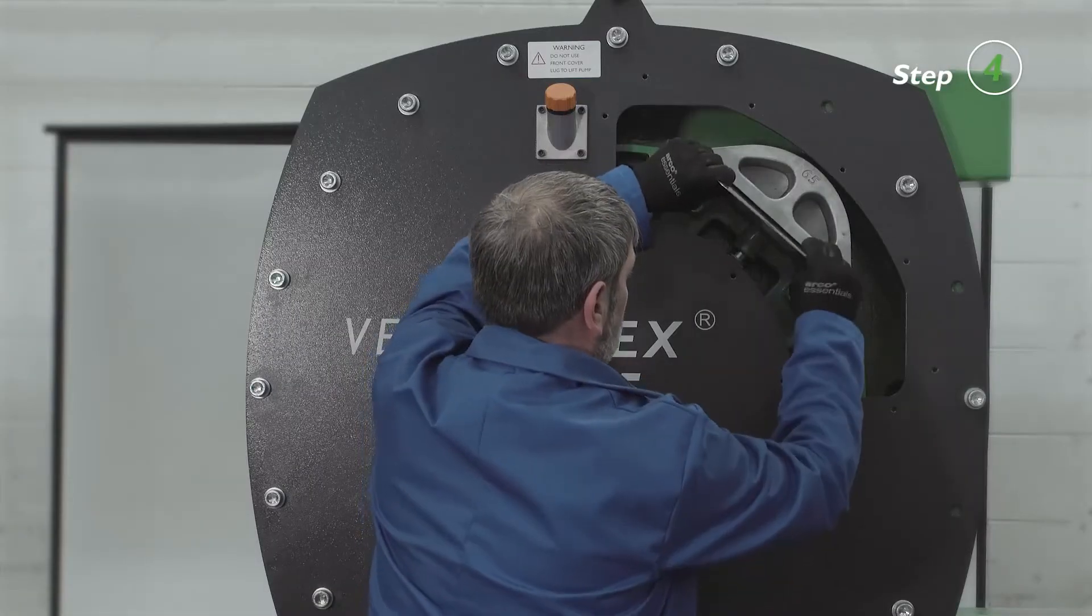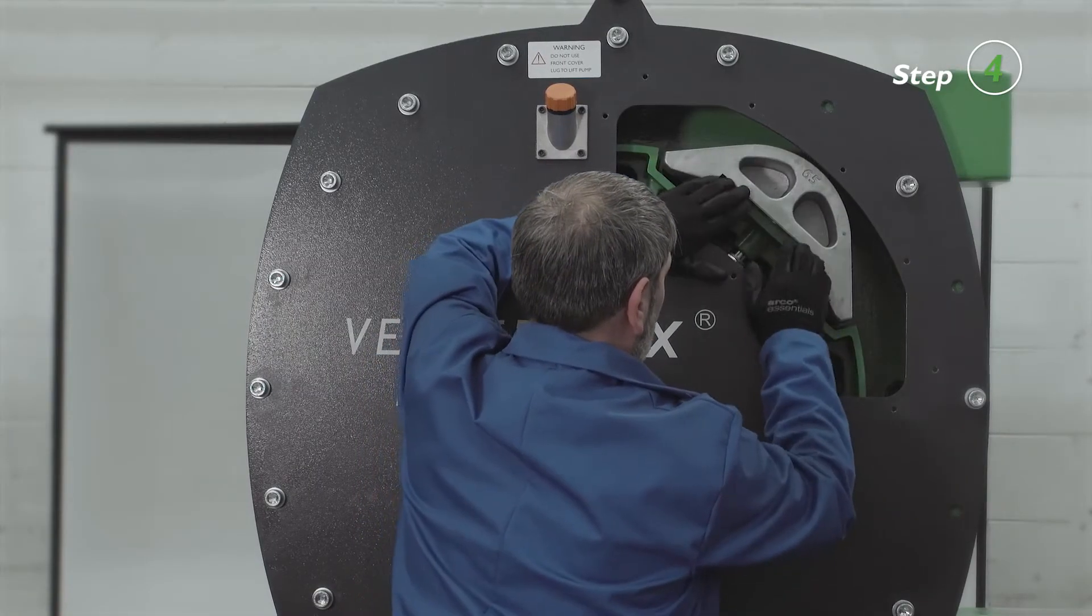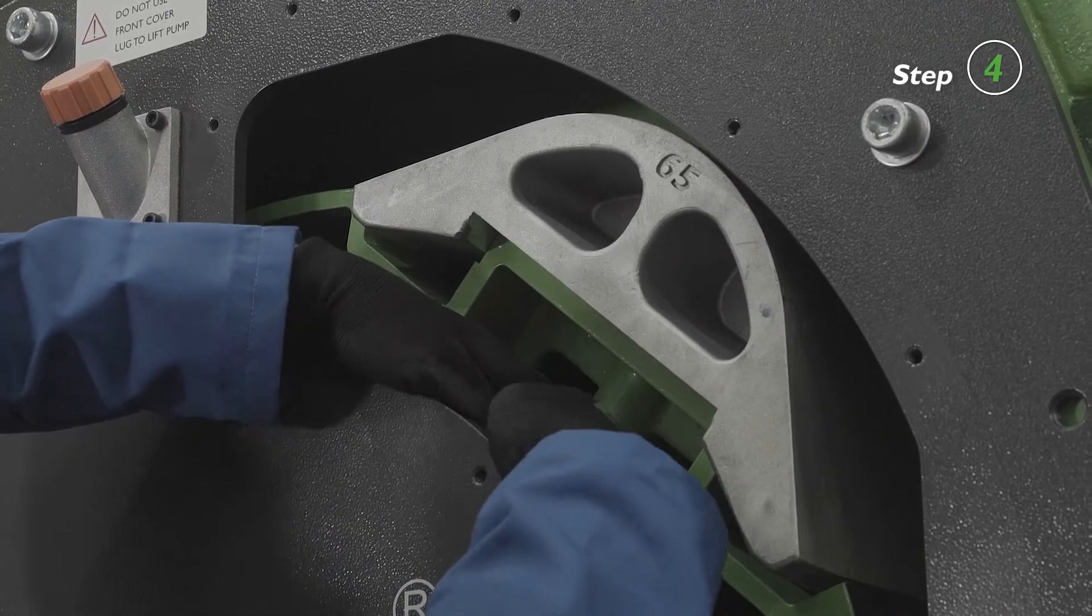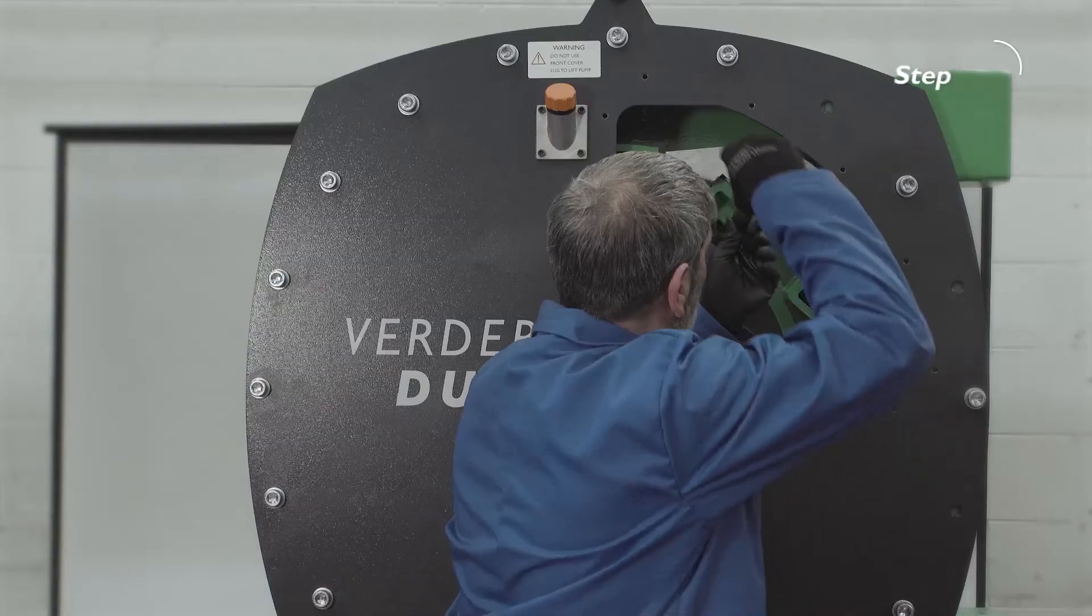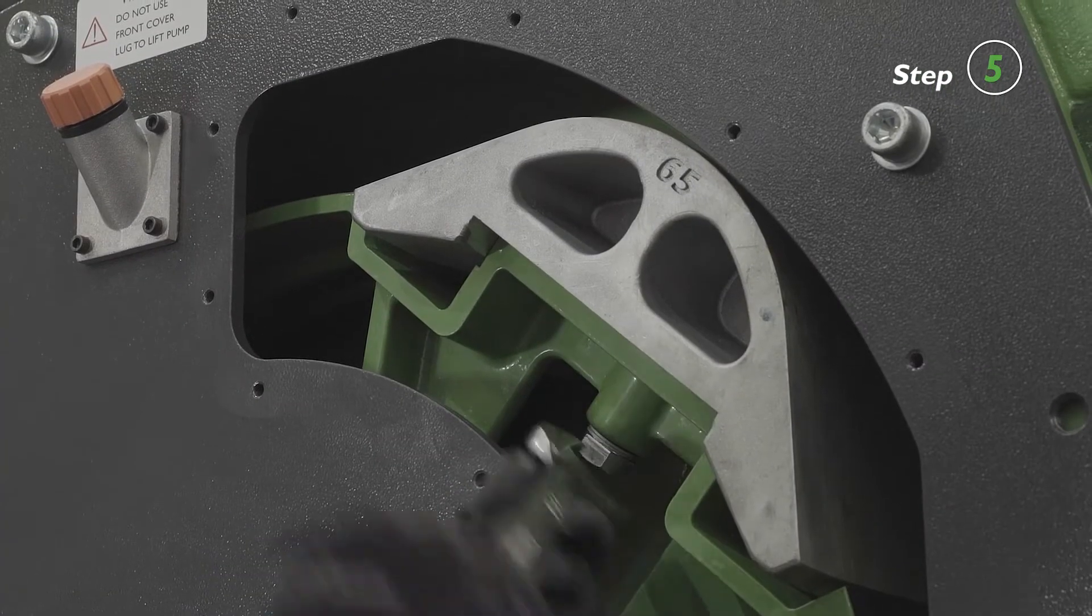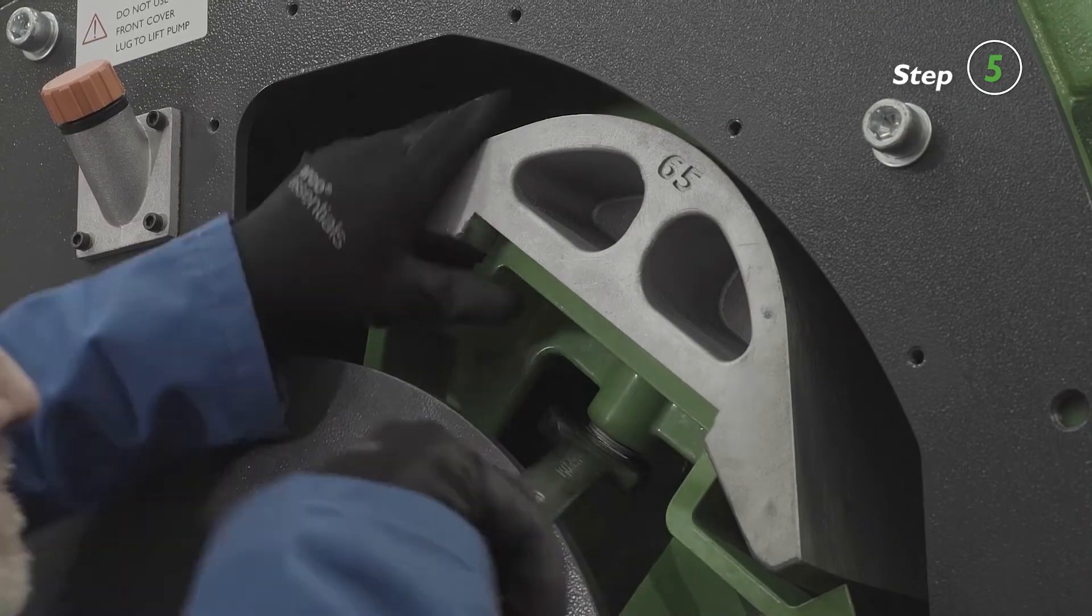Replace with the correct number of shims for the required pressure. Please refer to the Dura 65 manual, Appendix A. Tighten the shoe bolt with the correct torque. For torque values, please refer to the Dura 65 manual, Appendix A.